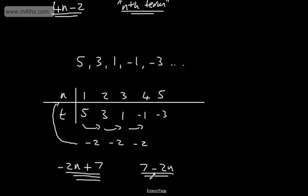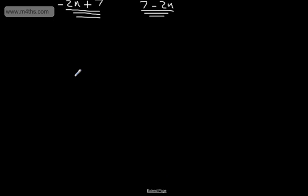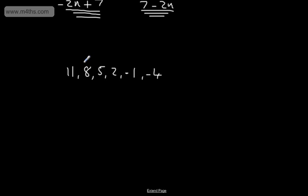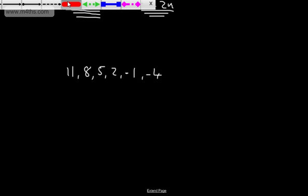So all we've done is look and see that it's going down by 2 each time. Let's do another one. Let's say we have 11, 8, 5, 2, minus 1, and minus 4. So this is going down by 3 each time.